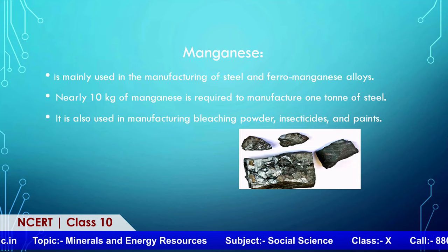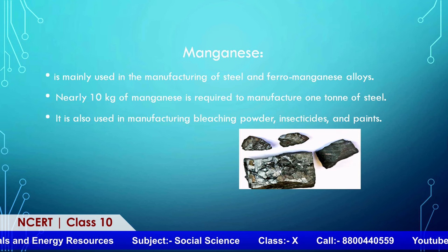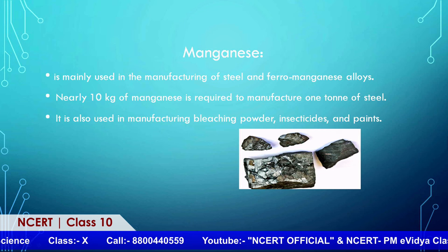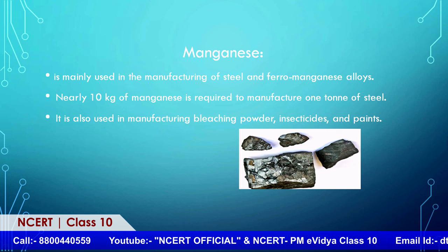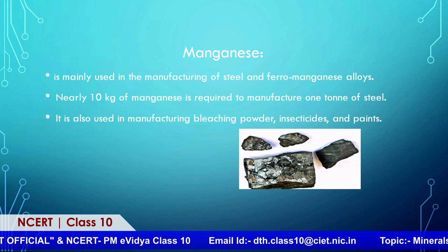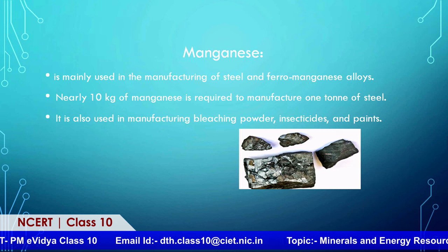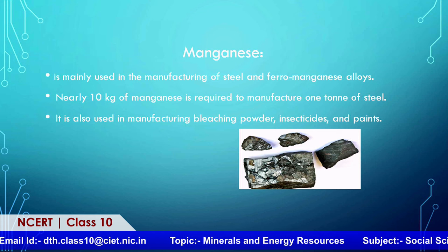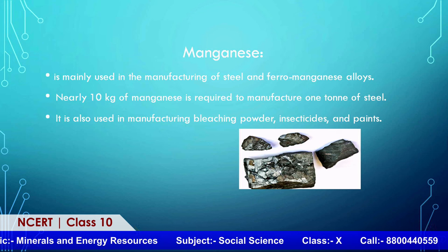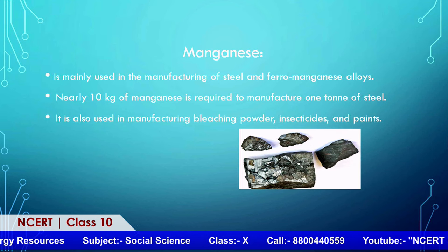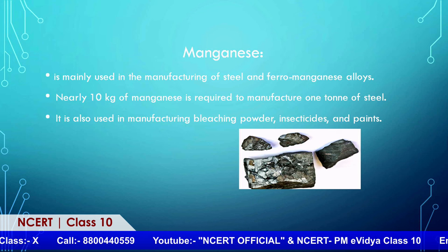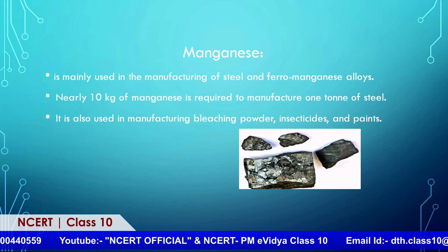Moving further, we have manganese, which is a ferrous mineral. For an iron ore industry, four important minerals are required: iron ore, coal, manganese, and limestone. If all four are found in one place, that is ideal for an iron and steel industry. India has such locations where all four minerals are found, and iron and steel industries are established there. Manganese is mainly used for manufacturing of steel and ferro-manganese alloys. Around 10 kg of manganese is required for manufacturing 1 ton of steel. It also helps in manufacturing bleaching powder, insecticides, and paints.